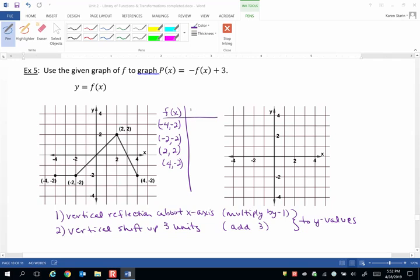And then p(x), which is -f(x) + 3, we're just going to look at all the y-values, multiply them by -1, then add 3. So I'm not going to change any of the x-values. I'm just going to jot those down first because we didn't have any horizontal transformations.